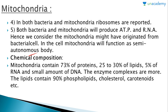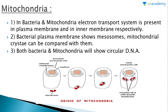Mitochondria function as a semi-autonomous body because they have their own DNA. This is the major reason they function semi-autonomously — having their own DNA allows mitochondria to perform vital functions like producing proteins. You should also look at the diagram of the origin of mitochondria according to Ackmann's theory.